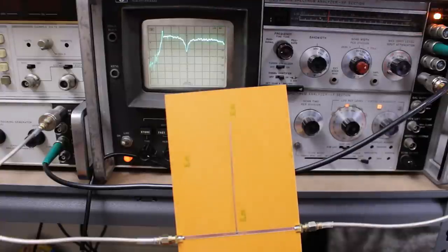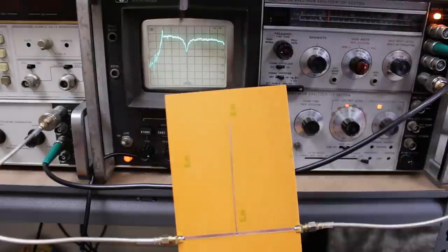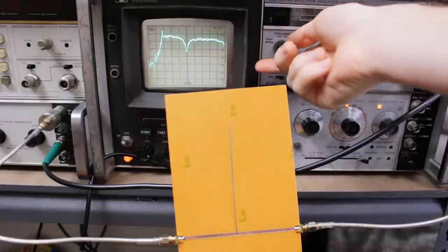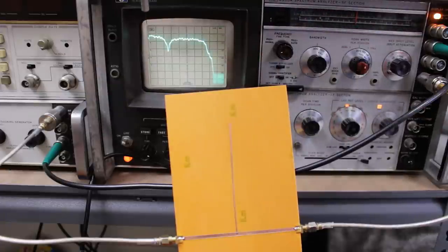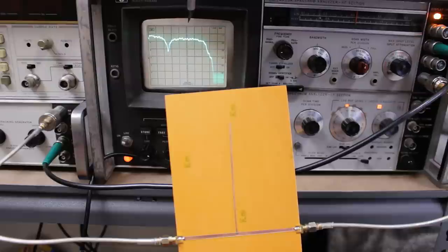So I've got the spectrum analyzer hooked up to the output of the filter and then I've got the tracking generator putting a test signal into this filter and you can see the frequency response of the filter here. If I just move it over a little bit we're looking at zero up to about one and a half gigahertz here. We're sitting at a center around one gigahertz.